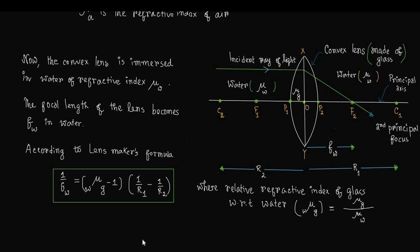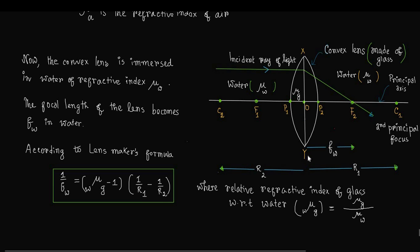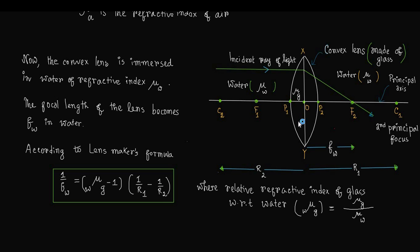Here, mu_g is the refractive index of glass and mu_w is the refractive index of water, the surrounding medium of the lens.